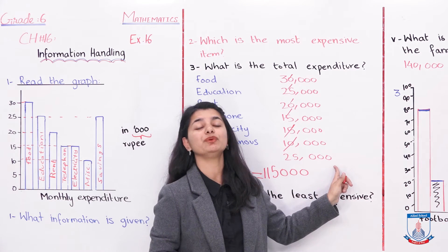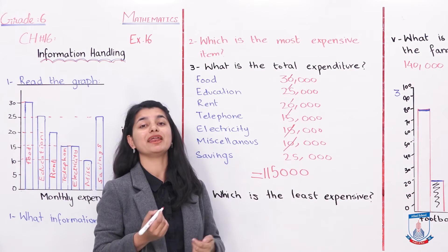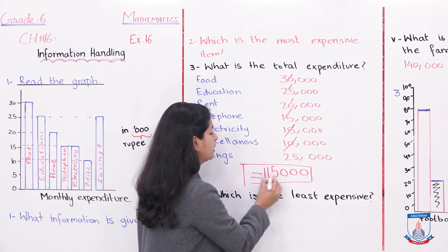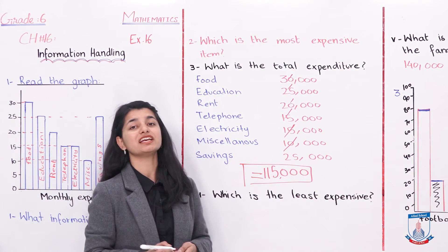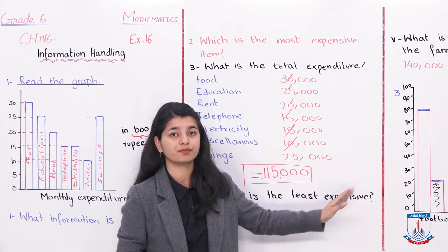Why don't we add 25,000? Because this is their saving. This is not going to be added in our expense. Therefore, your answer is that they had a total expenditure of 115,000 in that month.